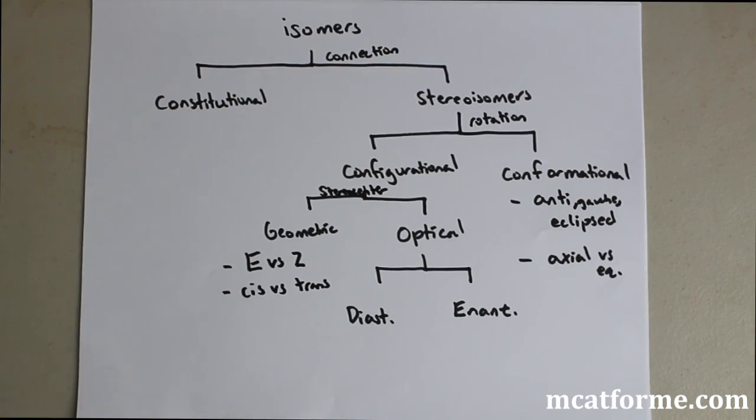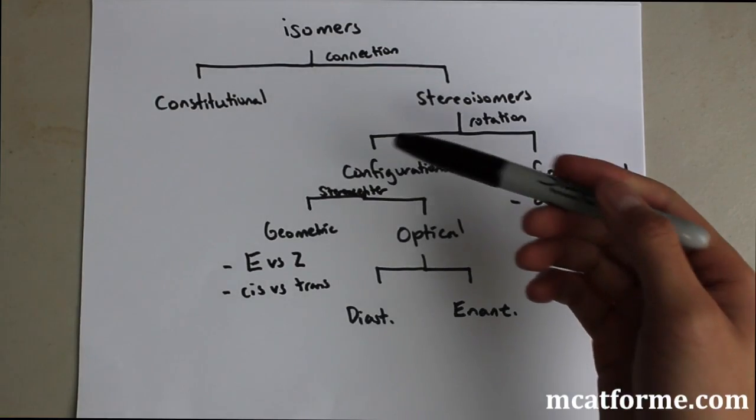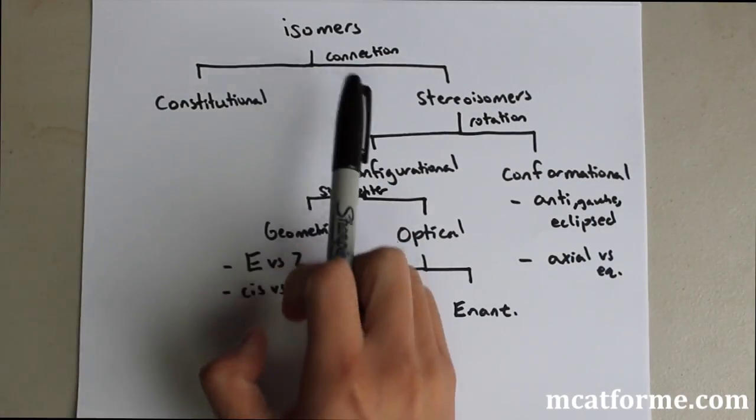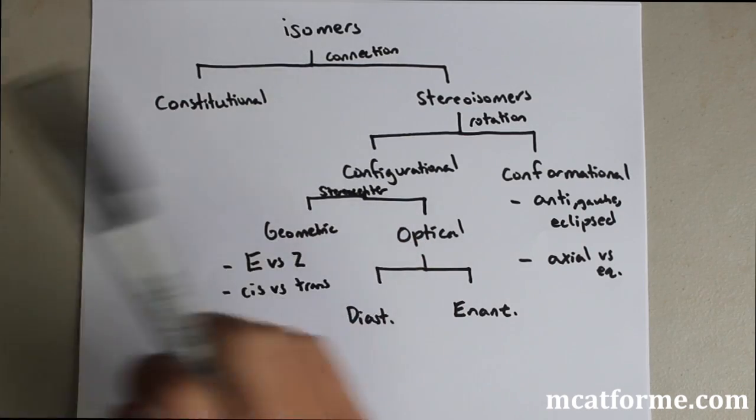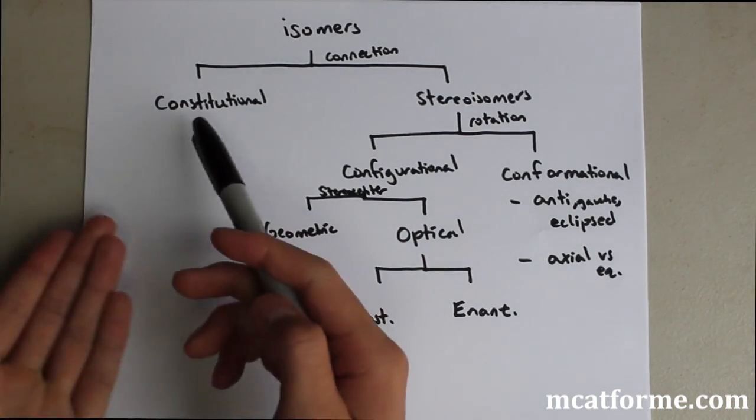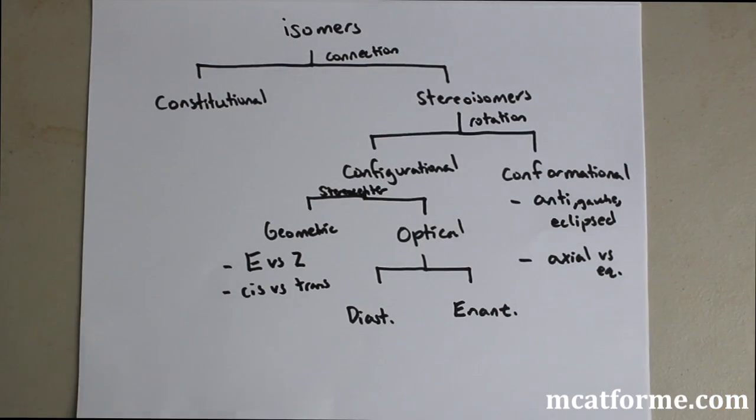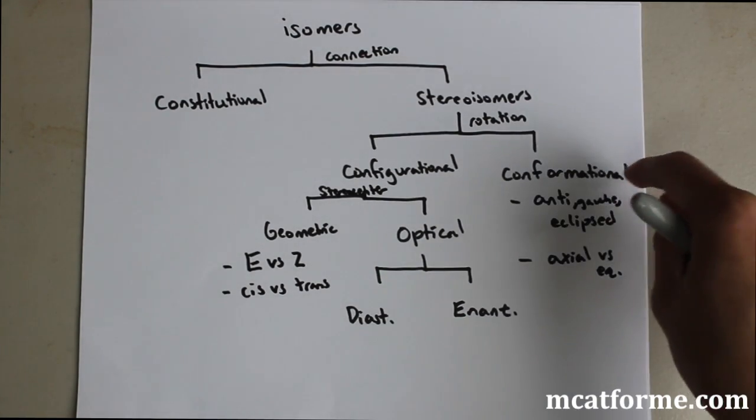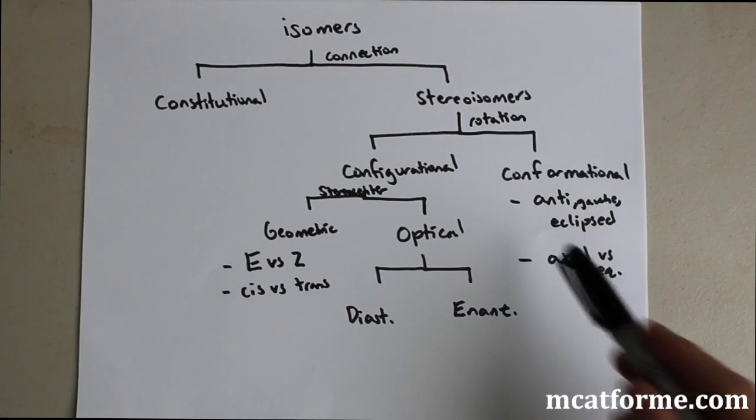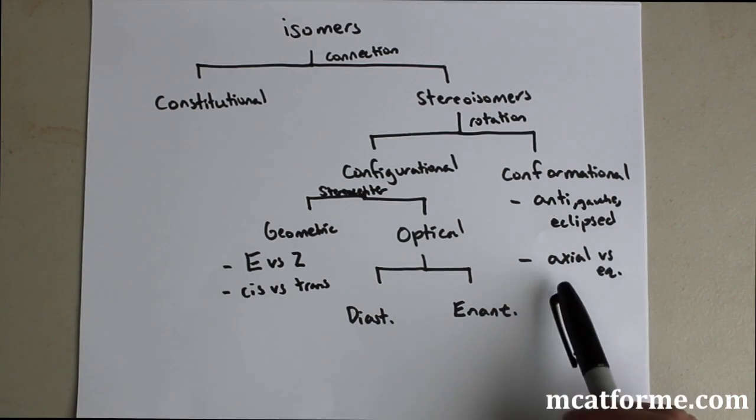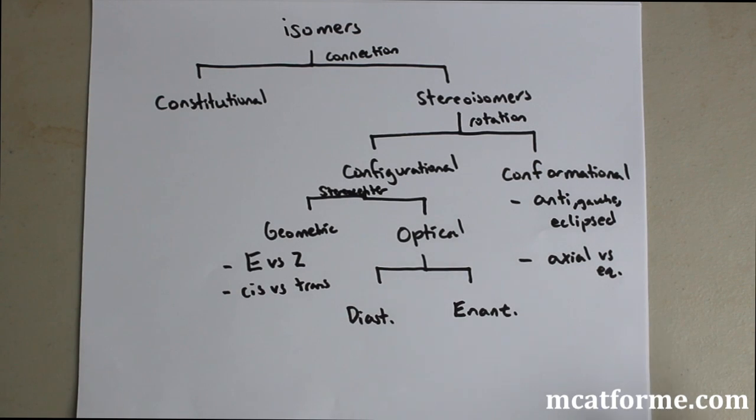So now this is just to summarize everything. So isomers can be divided into constitutional and stereoisomers, and it's by connection. So connectivity. Is it connected differently? Constitutional isomers. Or is it not? Then it's a stereoisomer. And within stereoisomer, we can divide it further by rotation. Does it differ rotationally, which will be conformational? Remember, in conformational, we have anti-gauche versus eclipse, and we also have axial versus equatorial. So those are the two that we need to know.